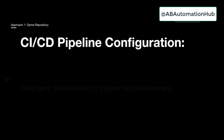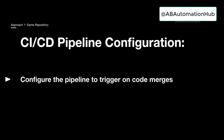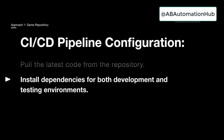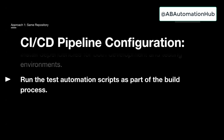In this process, we configure the pipeline to trigger on code merge — unlike earlier where the trigger was on the pull request. Once your code is merged, the latest code is pulled from the repository, all dependencies are installed, and then the test automation script is executed on that environment. The code is already in master. So in this approach you merge the code, deployment is done, your environment is ready, and now you run your test script as part of the build process.